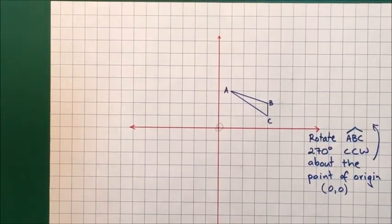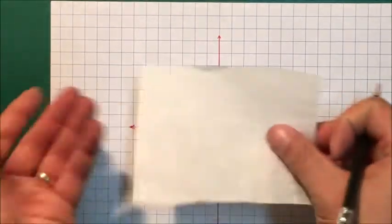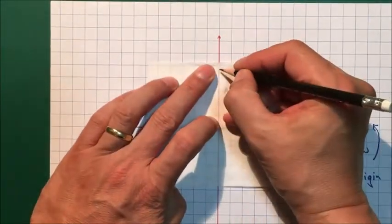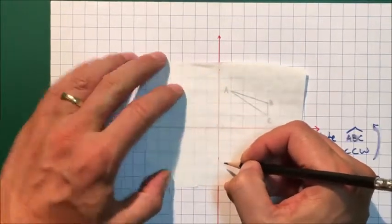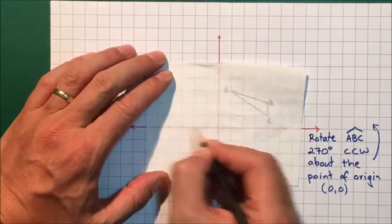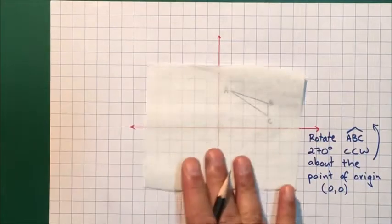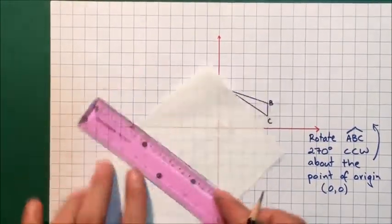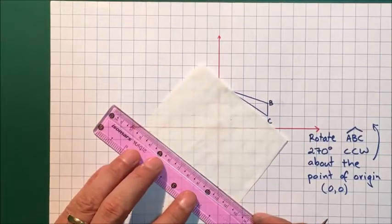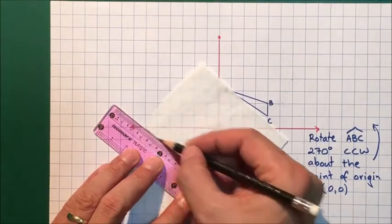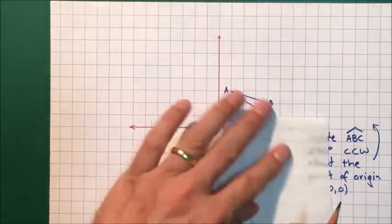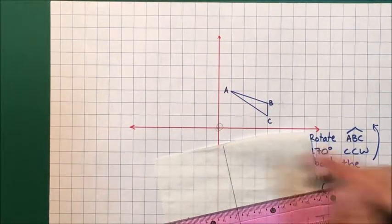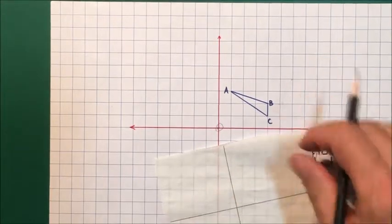be the center of rotation. What I need to do to make my job easier is get my tracing paper. To make my job even easier and more accurate, I'll draw a set of axes on my tracing paper. It really does make a difference in making sure the rotation is as accurate as I can manage. You don't have to do this, but it really does help.